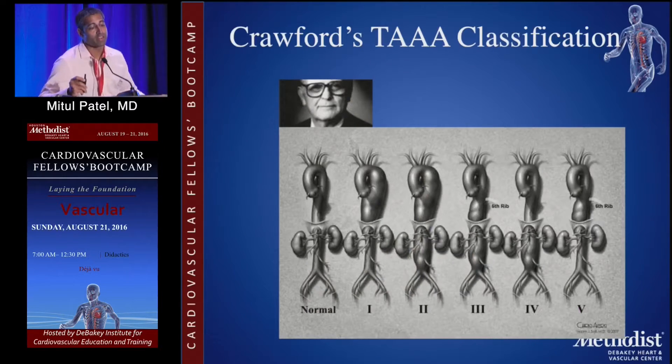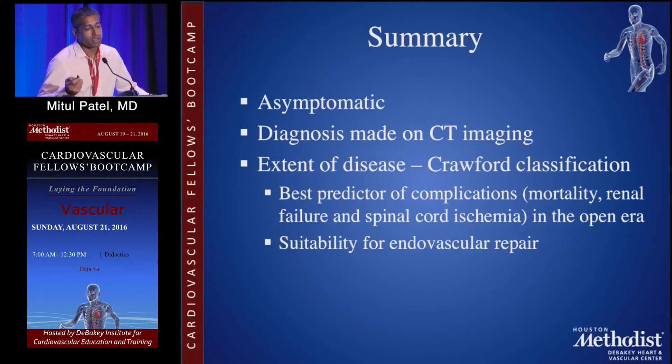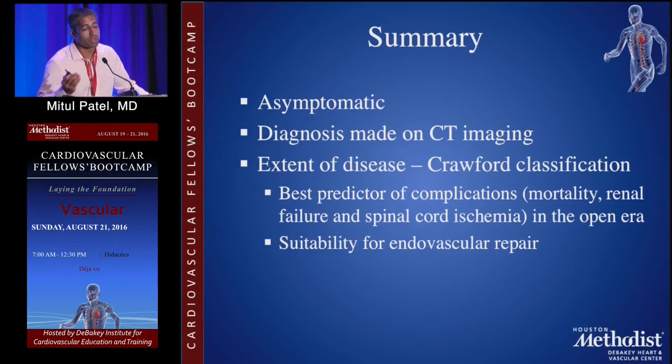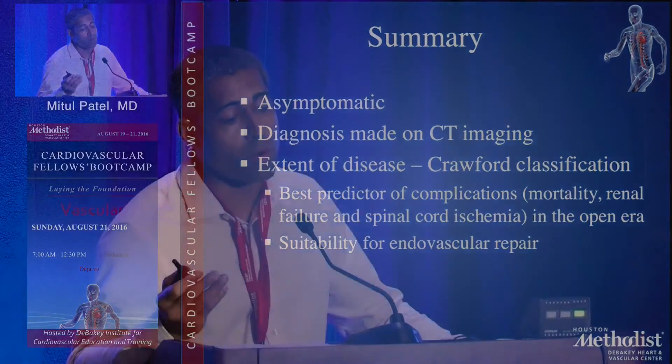The Crawford classification is important to know because it's a predictor of complications and allows you to plan what operation is even possible. In summary, most aneurysms are asymptomatic, and diagnosis and treatment planning are most often made through CT imaging. The extent of disease per the Crawford classification is the best predictor of complications and the suitability for endovascular repair.